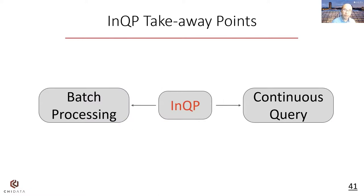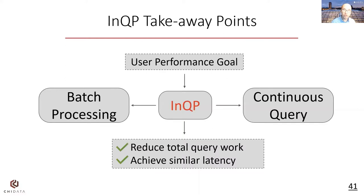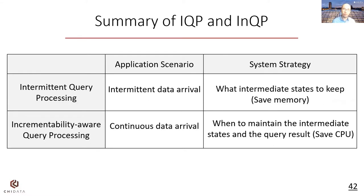In summary, we propose NQP as a query processing method that sits between batch processing and continuous query processing. It takes information about the user's performance goal as input to reduce total query work while achieving similar latency. IQP and NQP are applied to different scenarios and are complementary. When data arrives continuously, we use NQP to lazily maintain part of the query to reduce CPU consumption. When data arrives at a low rate or intermittently, we use IQP to discard some states to save memory. How to integrate the two into a single system is an interesting future research topic.